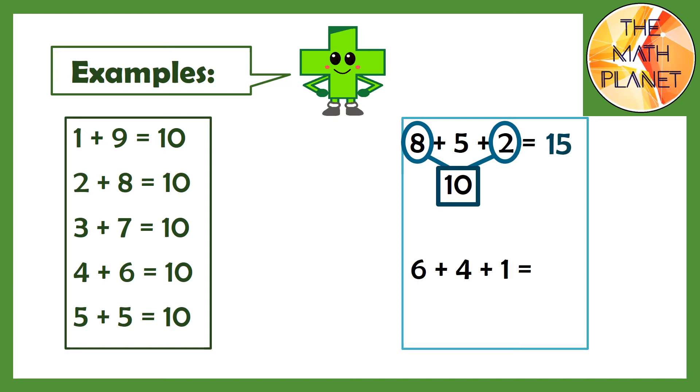Also, if I have 6 plus 4 plus 1, I will pick the two numbers that make 10 and add them first. Then I will add one more and the sum will be 11.